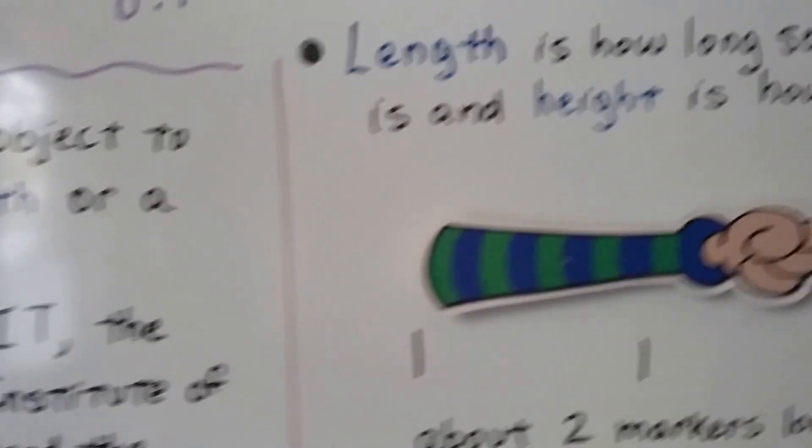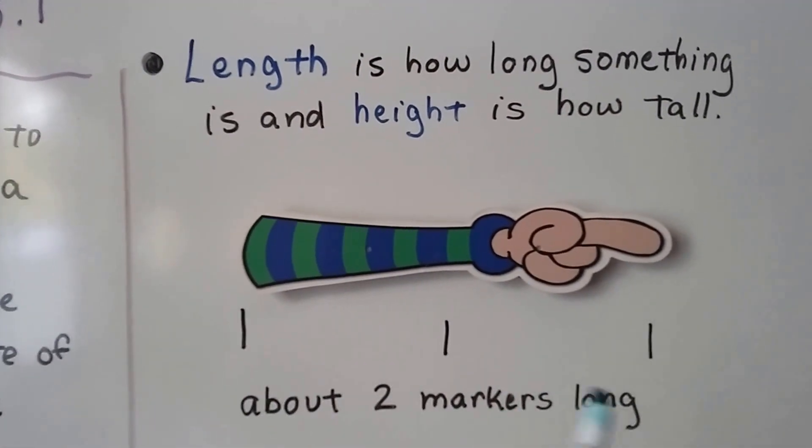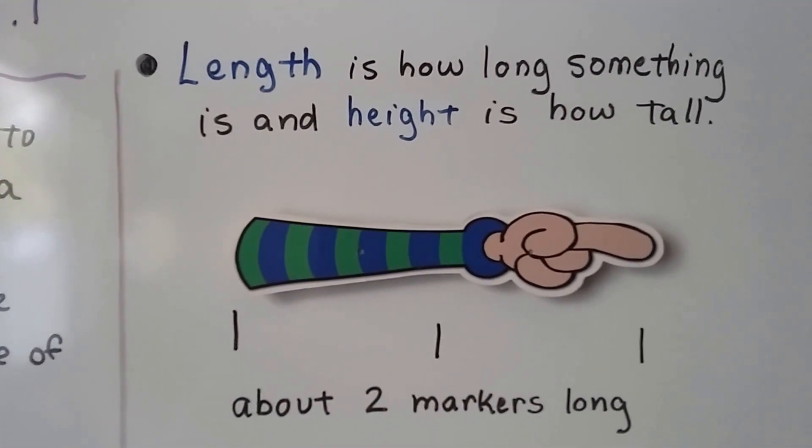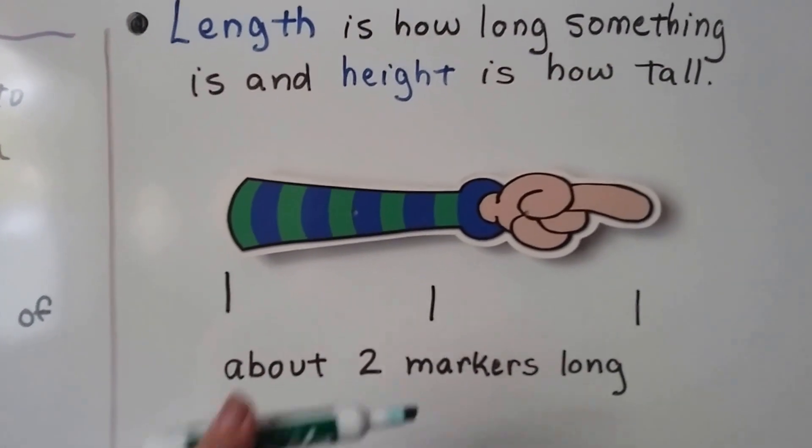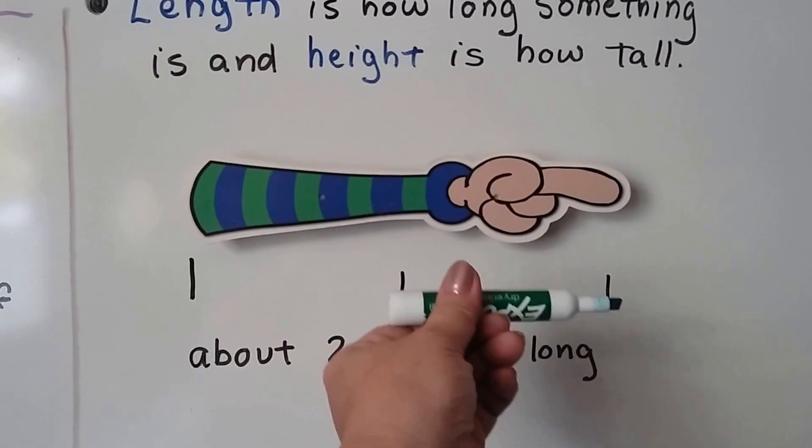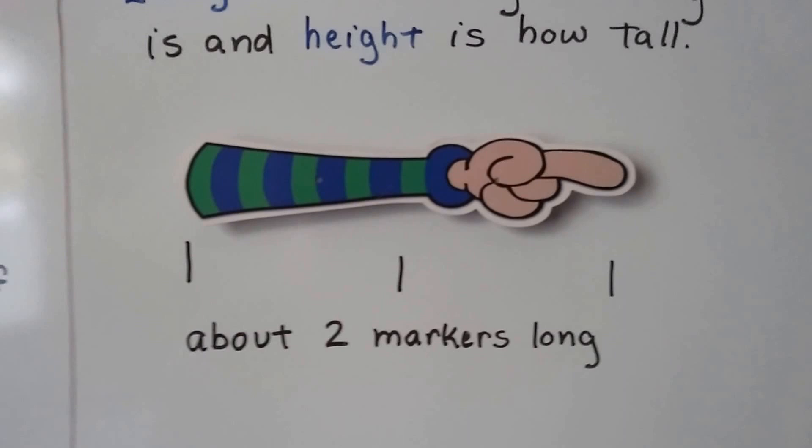Now look at this. Here's the length of this. It's about two markers long. Length is how long something is and height is how tall. So this is one marker, two markers. See? It's not exact. It's an estimate. It's about two markers long.